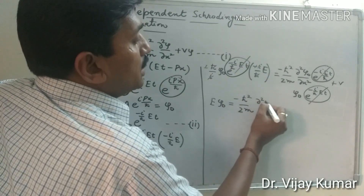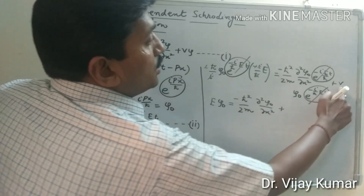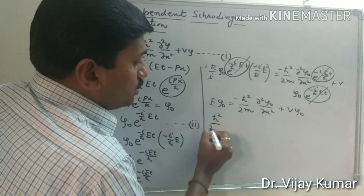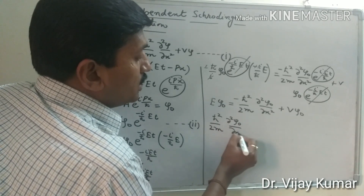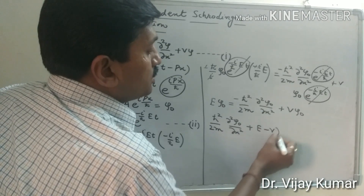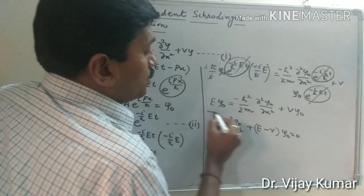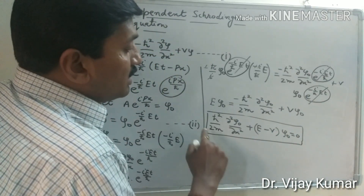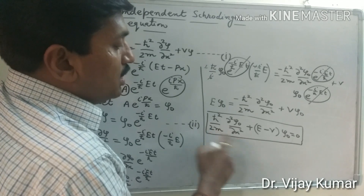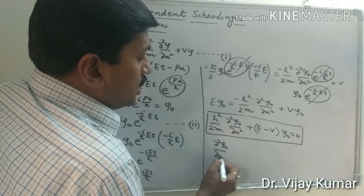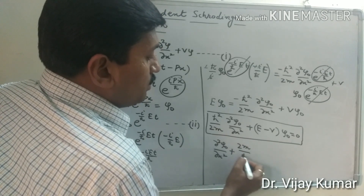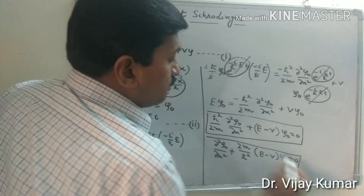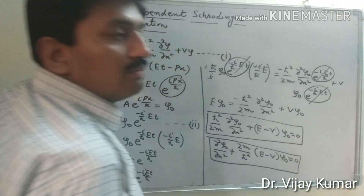Rearranging, we get h-cross squared upon 2m times del squared psi-naught upon del x squared plus E minus V times psi-naught equals zero. This is the time-independent Schrödinger wave equation. Dividing through by h-cross squared upon 2m, another form is: del squared psi-naught upon del x squared plus 2m upon h-cross squared times quantity E minus V times psi-naught equals zero. This is another form of the time-independent Schrödinger wave equation. Thank you.